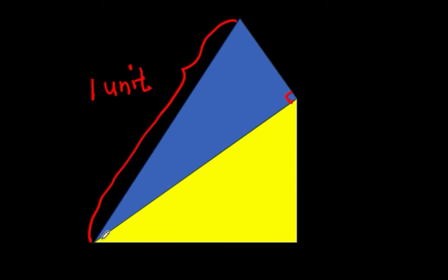We'll begin with this blue right triangle. This angle here is a right angle and the length of the hypotenuse of this blue triangle is one unit. Then let's draw another right triangle such that the hypotenuse of this new yellow triangle is equal to the length of the base of the blue triangle. This yellow triangle is a right triangle. Then let's drop a line segment from one of the vertices of the blue triangle perpendicular to the base of the yellow triangle.